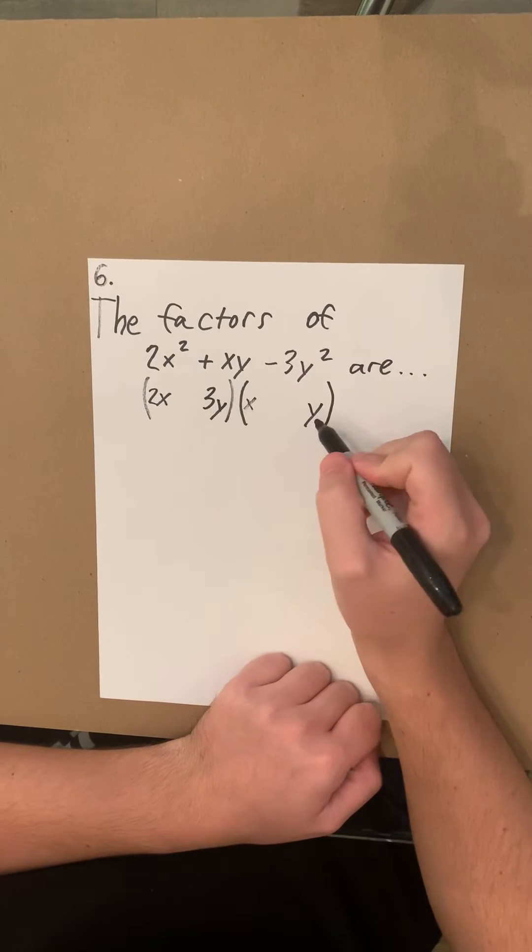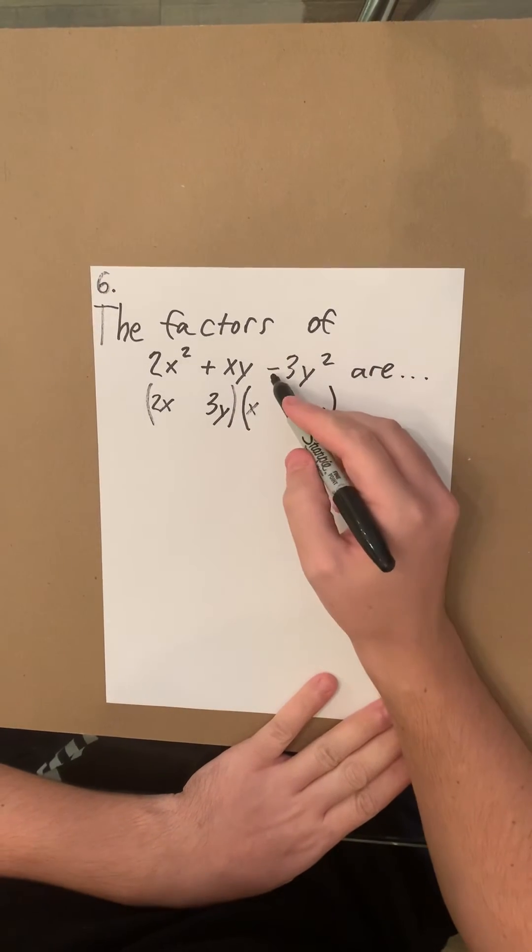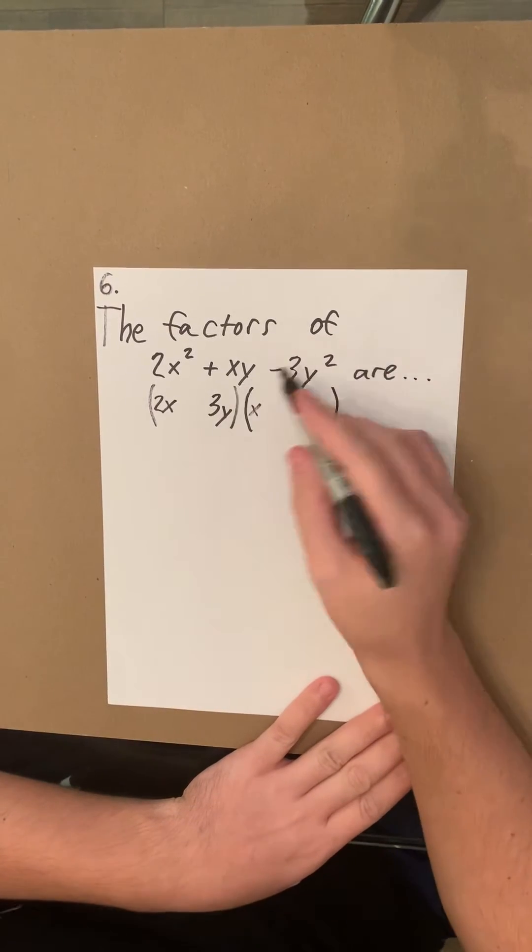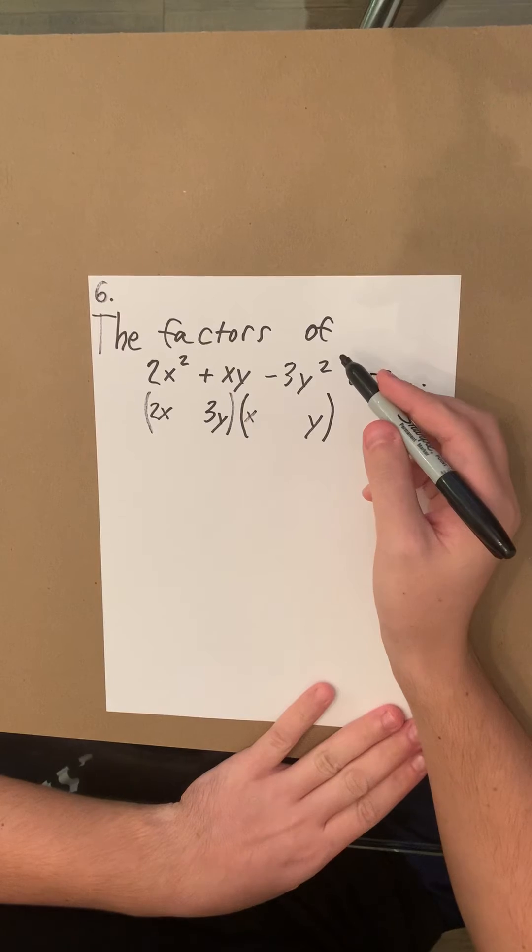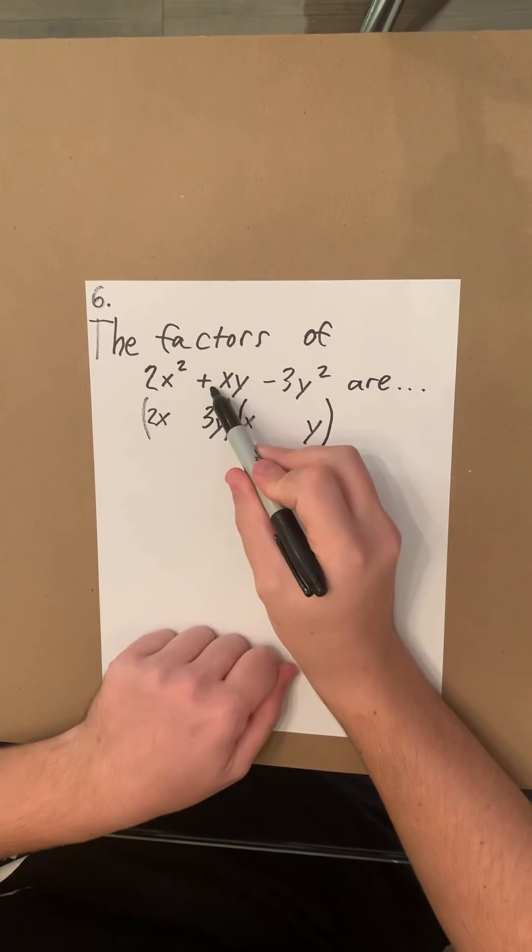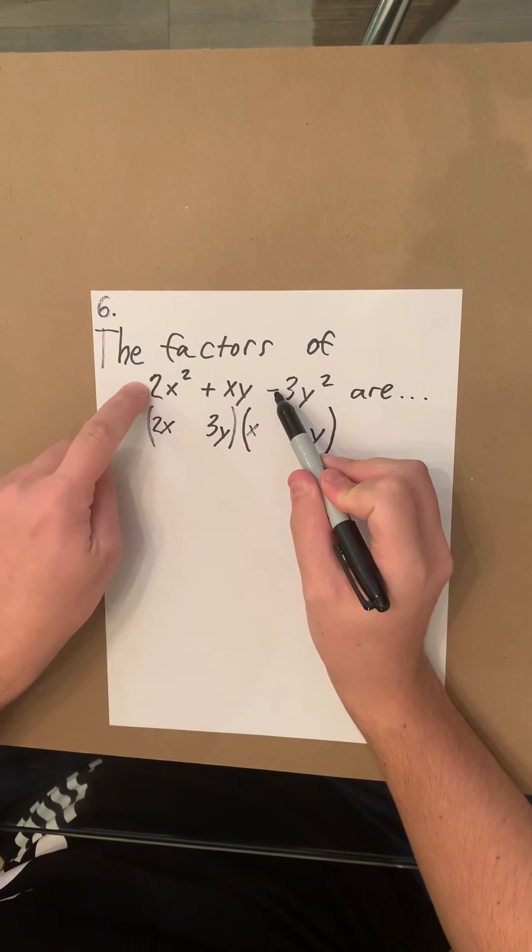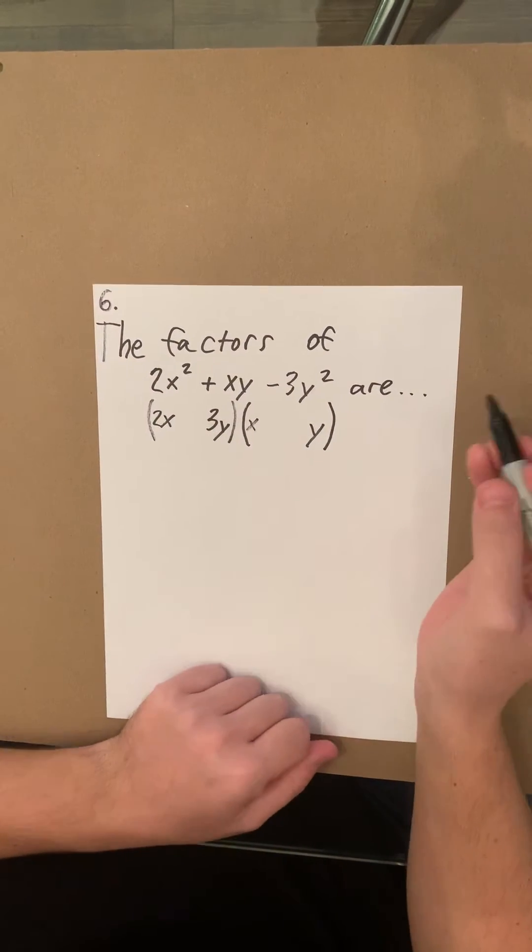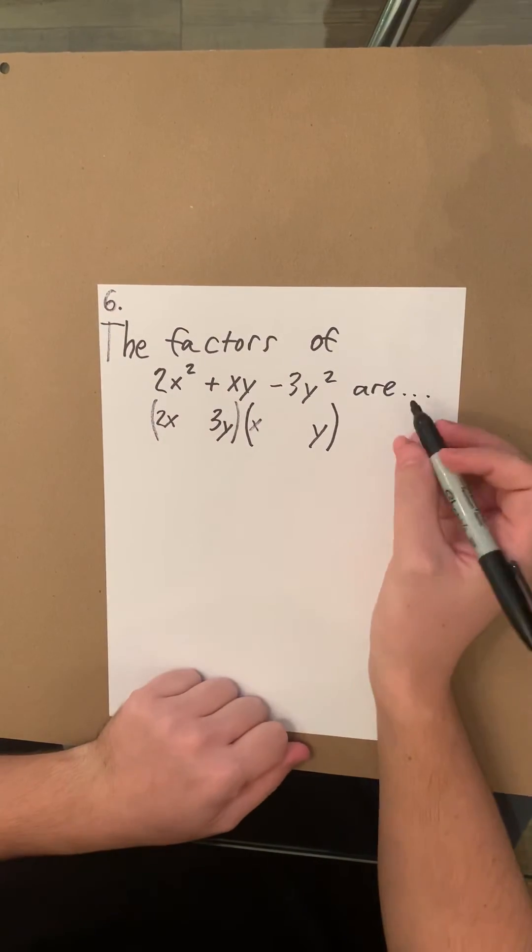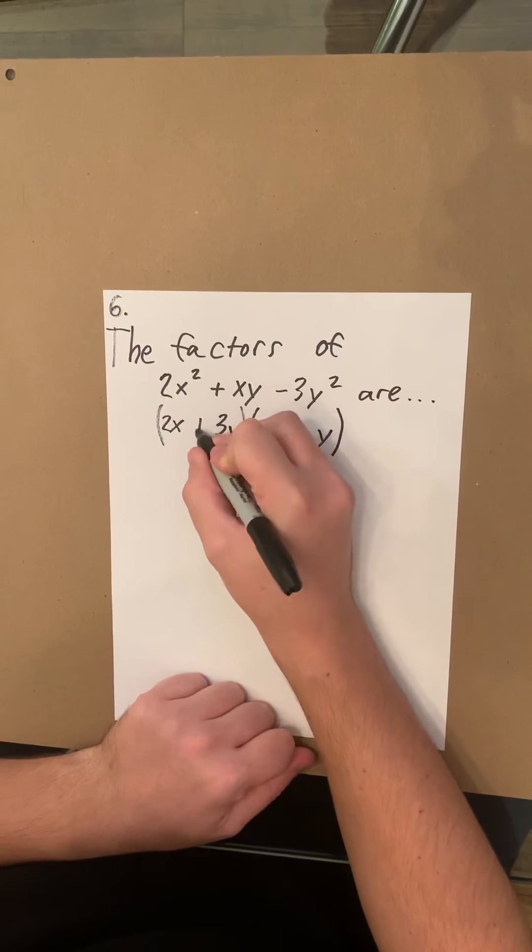The tricky thing is when you have negatives, you have to make sure you're putting them in the proper space. A good way to look at this: since this term is positive, you want to put your negative on the smaller number. Because at the end, when you add them up, you want this to equal positive. So we're going to put the negative here and the positive here.